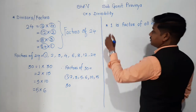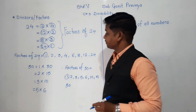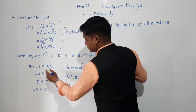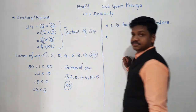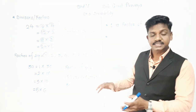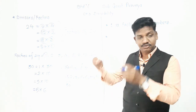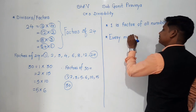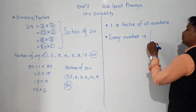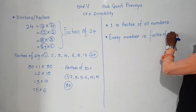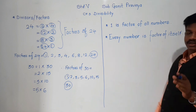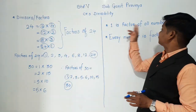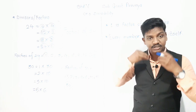Another property: we found that 24 is a factor of 24 and 30 is a factor of 30. So every number is a factor of itself. For example, 100 is a factor of 100, 3 is a factor of 3, 50 is a factor of 50. So just as 1 is a factor of all numbers, similarly every number is a factor of itself.